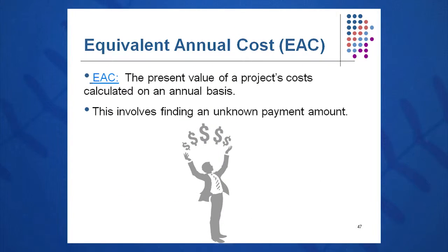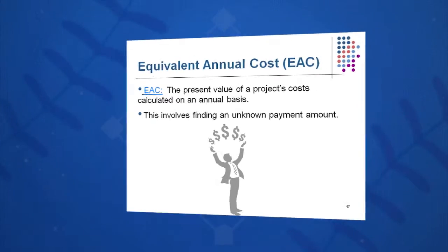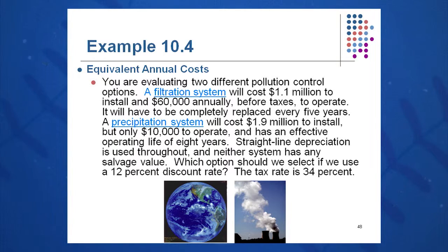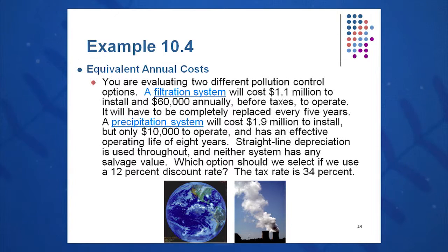The final special case involves projects where similar functions are needed but with different costs and useful lives. One option may be more expensive to purchase but have lower annual maintenance costs. In this example, a chemical manufacturer can choose a filtration system or a precipitation system — both accomplish the same pollution control function. The filtration system costs $1.1 million and $60,000 per year to operate, with a five-year life. The precipitation system costs $1.9 million but only $10,000 per year to operate, lasting eight years. These have differing lives and different maintenance costs. Which is better at a 12% discount rate?